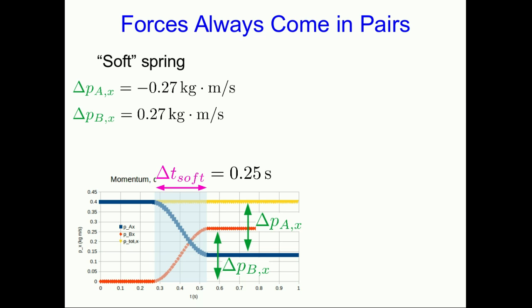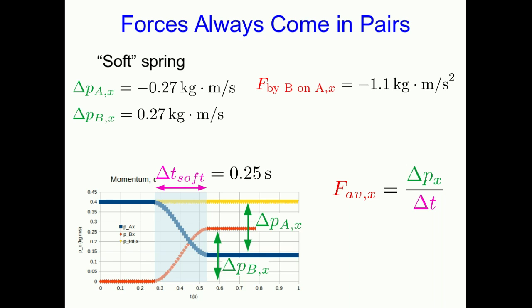We can now use our definition of force. In this case, there's only one force that matters on these carts, so we can find the average force this spring exerts on the carts by doing change in p over change in t — that is, the rate of change of momentum. Plugging in the numbers, the force that cart B is exerting on cart A is 1.1 kilogram meters per second squared in the negative x direction, and the force by A on B is exactly the same magnitude pointing in the other direction.